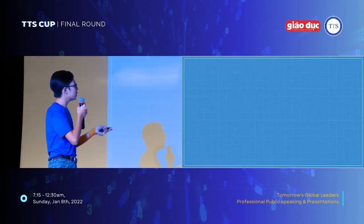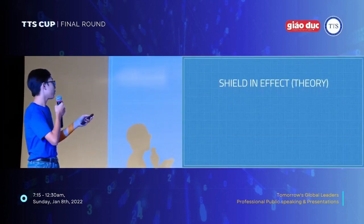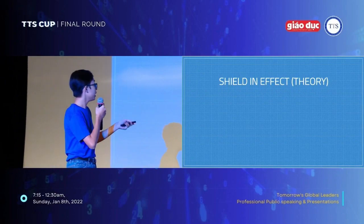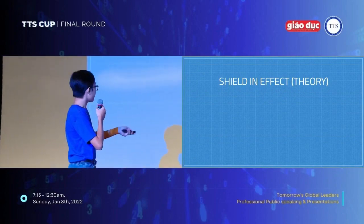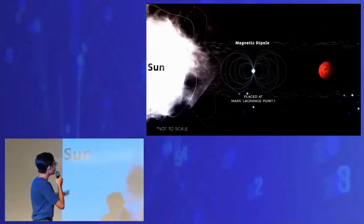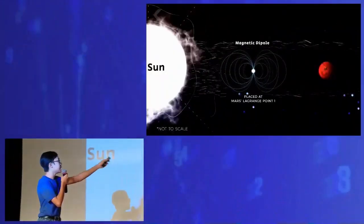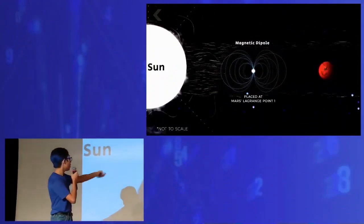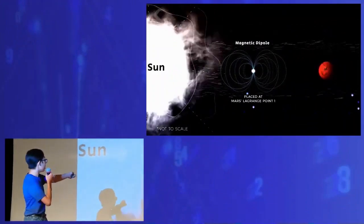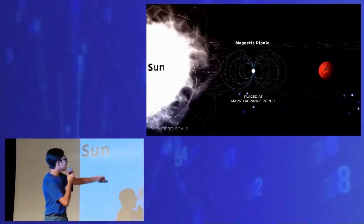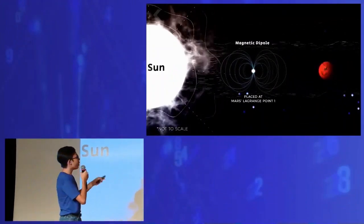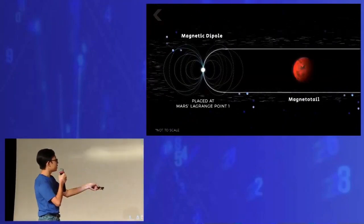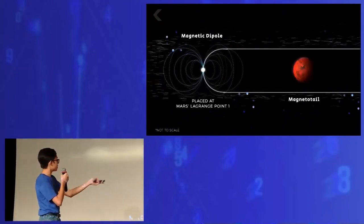Now, if we were to do it, this is how it would work. Keep in mind this is only a theory. So if we were to place a magnetic dipole at the Mars frequency point 1, it will block the solar wind and also generate a magnetotail, which protects Mars.